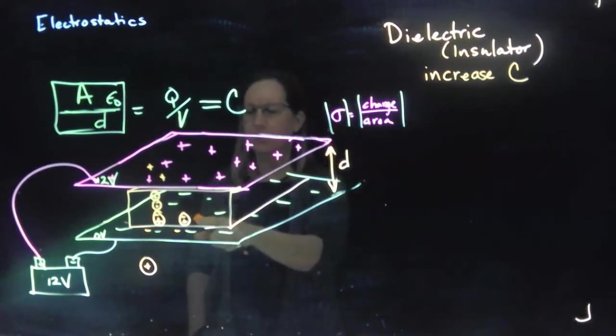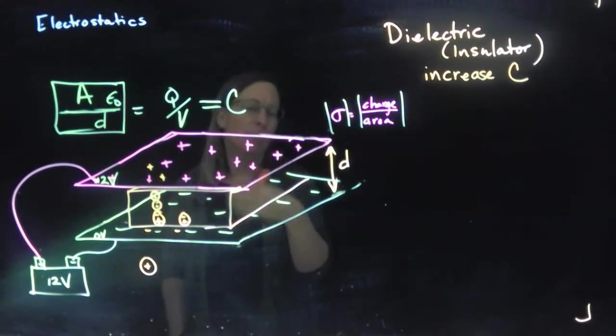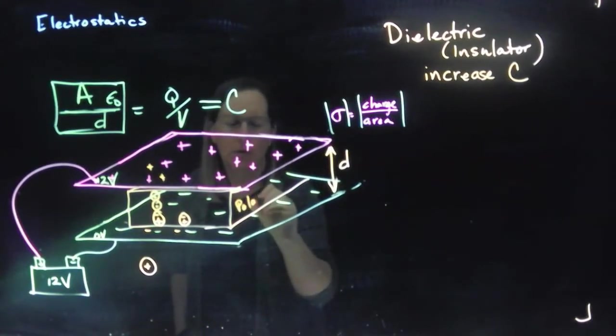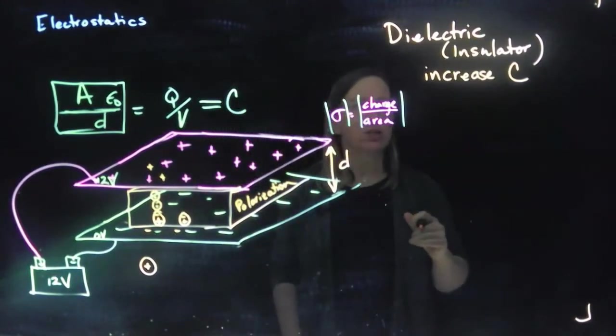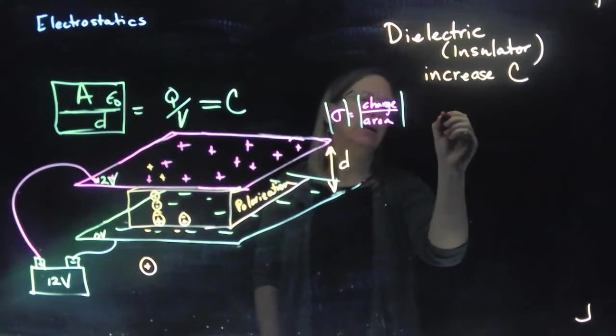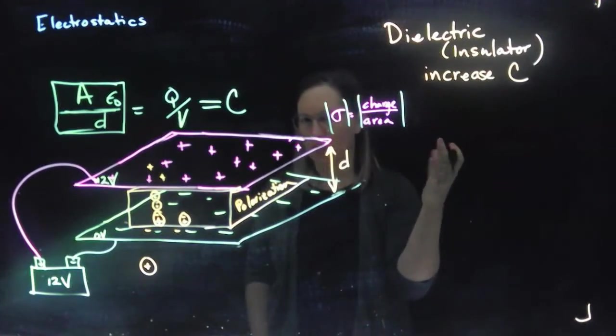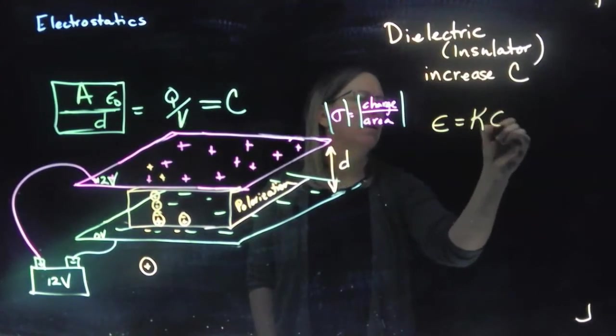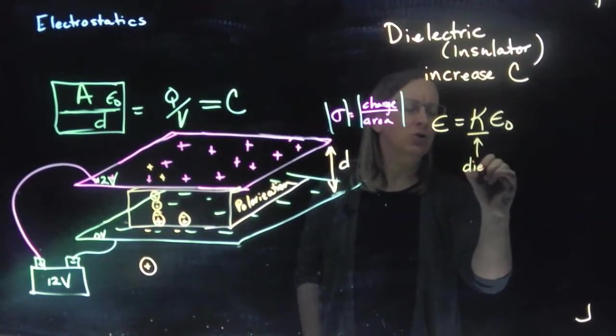And how much we can increase it depends on how easy it is to polarize this material. So we talk about how easy it is to get this polarization. How easy it is to polarize the material, we connect that to something called our dielectric constant. And so what we say is that we can create this K. K is not kinetic energy. I'm going to write it as kappa. We can say that we do it in terms of this constant, where this K tells us this is our dielectric constant.